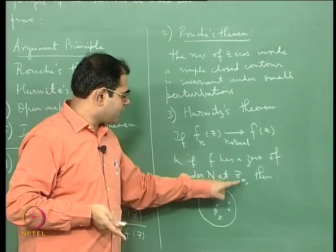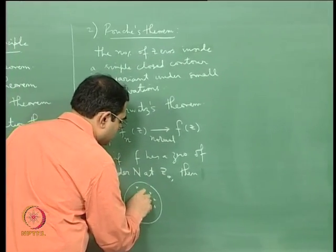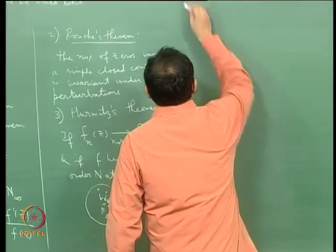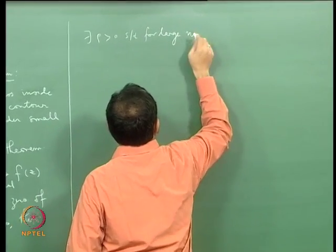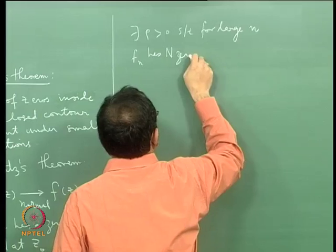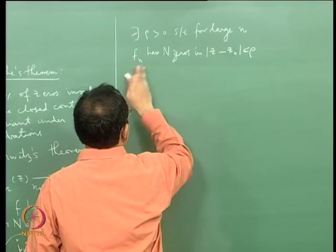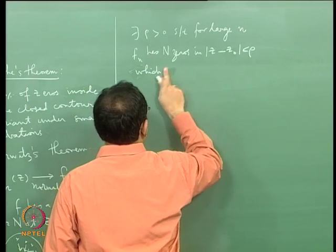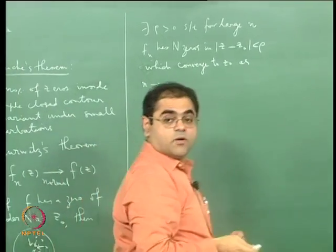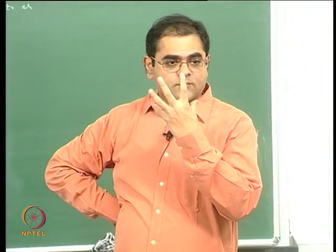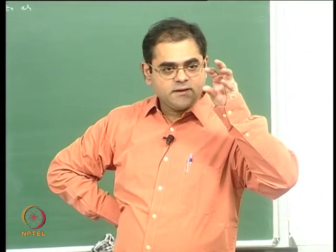So then there exists ρ > 0 such that for large n, f_n has n zeros in |z−z0| < ρ, which converge to z0 as n tends to infinity. What Hurwitz's theorem says is that the zero of the limit comes from the zeros of the functions that you are taking limits of — those zeros slowly coalesce together and give you the zero of the limit function.